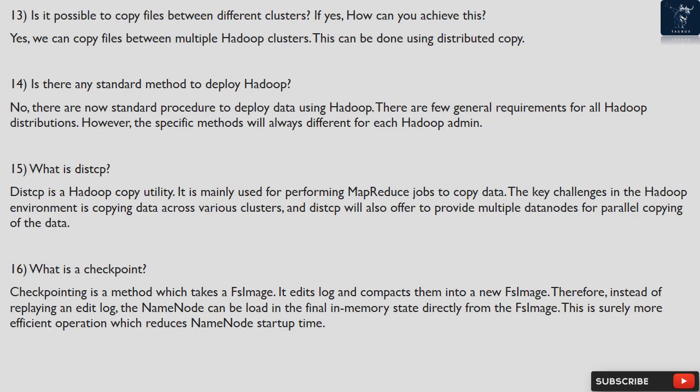Question 15: What is DistCP? DistCP is a Hadoop copy utility. It is mainly used for performing MapReduce jobs to copy data. The key challenge in the Hadoop environment is copying data across various clusters, and DistCP also offers multiple data nodes for parallel copying of data.